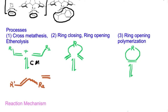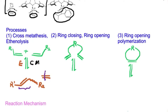The reverse reaction is called ethenolysis, where ethylene is added back and performs a [2+2] cycloaddition with our desired product, going back to form the reactants. So if we increase the pressure of ethylene, the reaction is actually favorable in the reverse direction. Since that is out of the way, this same concept is applicable to ring closing metathesis.